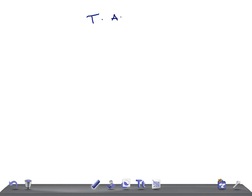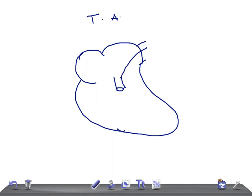Truncus arteriosus is nothing but a persistent truncus. Let me draw a diagram and explain you. So there is a single arterial trunk that emerges from the ventricles. Let me draw over here. And this emerges like this.